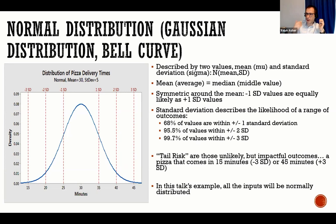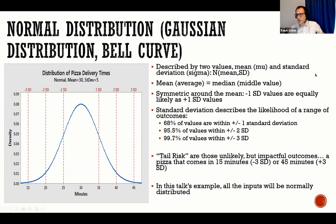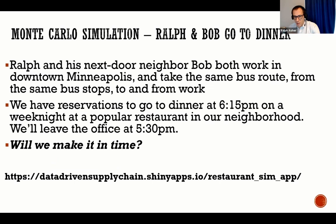Tail risk refers to those unlikely but impactful outcomes that happen at the real extremes of the probability distribution. In the pizza example, if I'm expecting delivery in 30 minutes and it comes in 15 — maybe I was planning a party and people haven't arrived yet. If it comes at 45 minutes, people are going to be hungry. In my Monte Carlo example, all inputs will be normally distributed for convenience, but keep in mind that in real life, not everything is normally distributed.